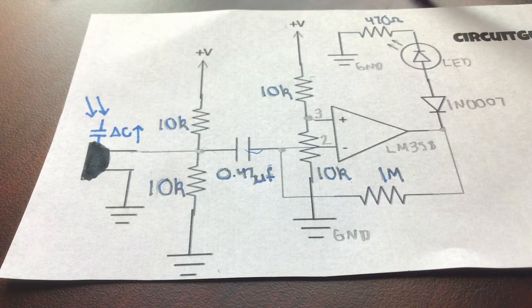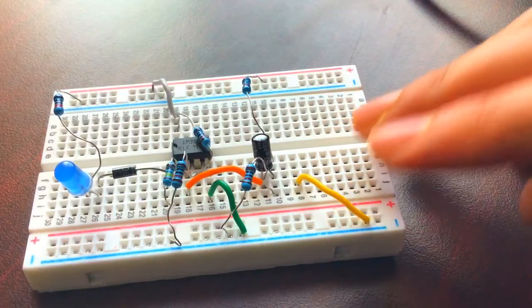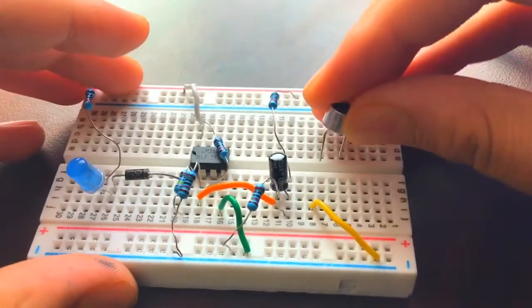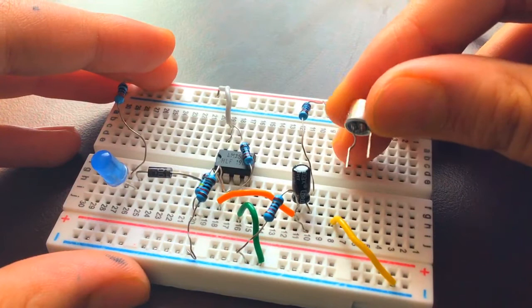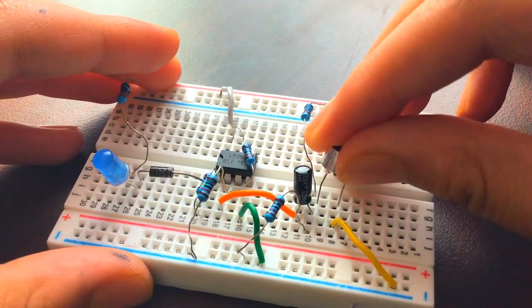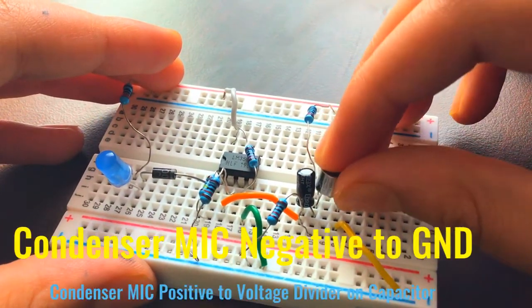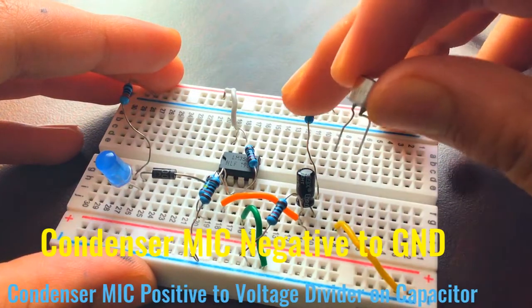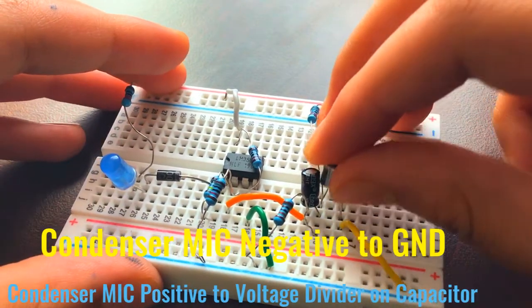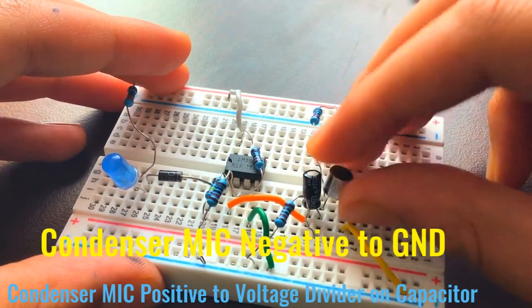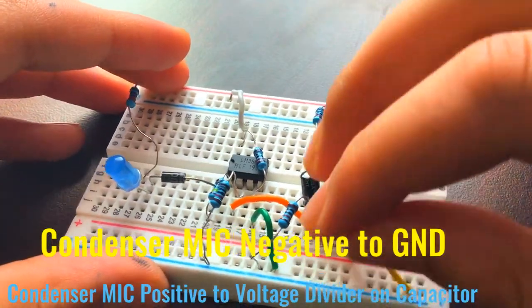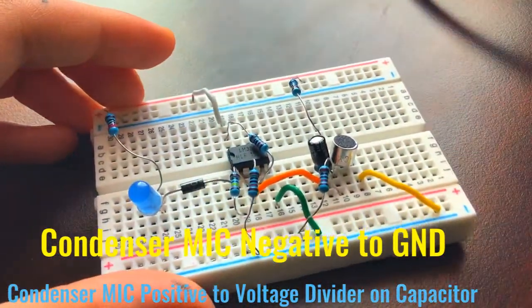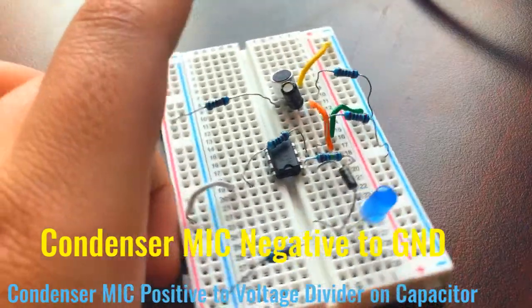The wire connecting to the negative rail: we connect the condenser mic's negative over there, and its positive to the side of the capacitor where the voltage divider was, right over here. Now the sound and the signals can travel all around the circuit, so now our LM358 op-amp circuit is complete.